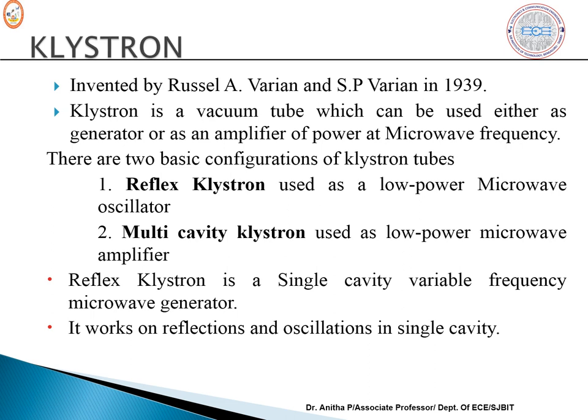There are two configurations: reflex klystron and multi-cavity klystron. The reflex klystron is used as a low power microwave oscillator with a single cavity, generating a variable frequency from 1 GHz to 200 GHz. The multi-cavity klystron is used as a low power microwave amplifier. The reflex klystron works on reflections and oscillations produced in that single cavity.